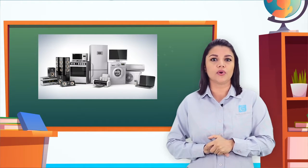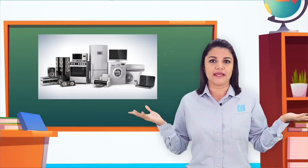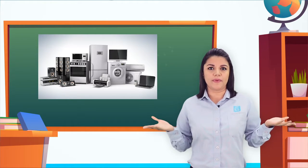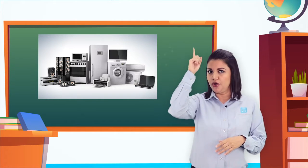Refrigerator magnets hold papers, bottle openers and other small items to the metal fridge door. A pocket compass uses a magnetic needle to show which way is north.